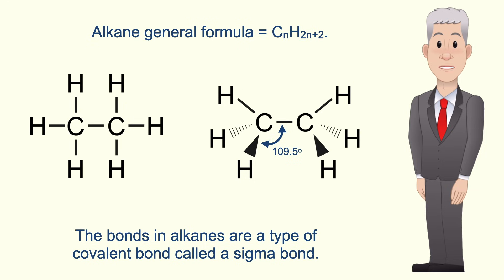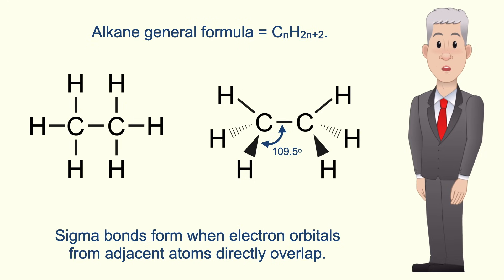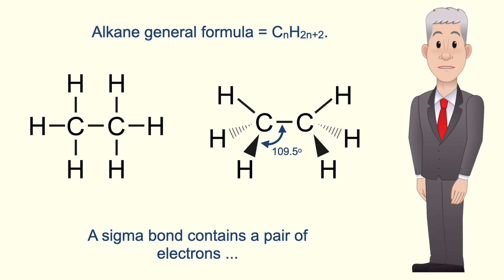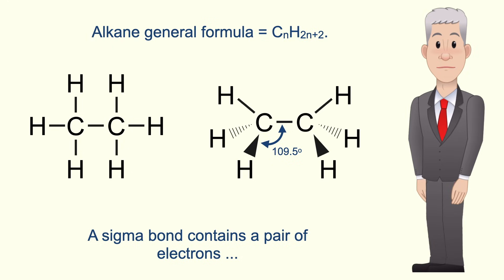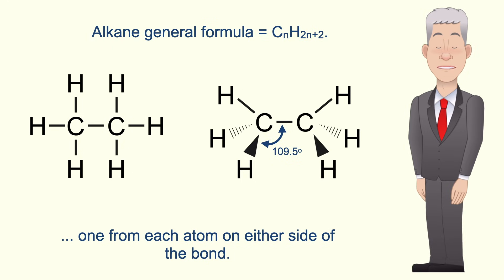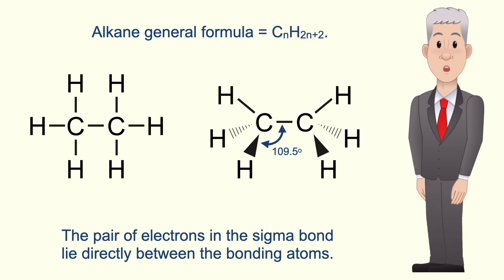The bonds in alkanes are a type of covalent bond called a sigma bond. Sigma bonds form when electron orbitals from adjacent atoms directly overlap. A sigma bond contains a pair of electrons, one from each atom on either side of the bond, and the pair of electrons lie directly between the bonding atoms.